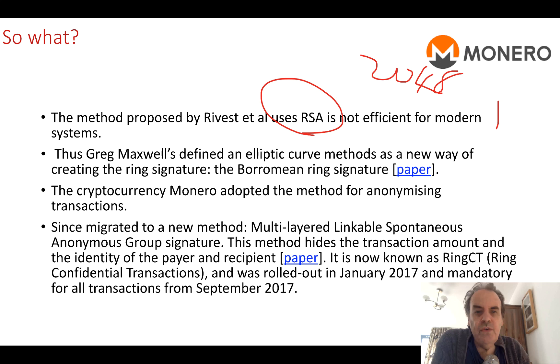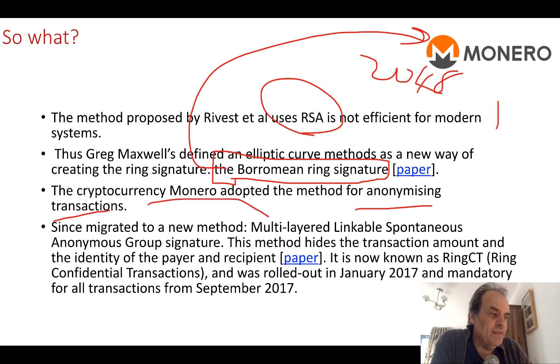So Greg Maxwell created a new type of signing using elliptic curves, and he used this method here. This was then used by the Monero cryptocurrency to implement anonymized transactions. But there were a few little weaknesses in it, and they've now moved towards the Multi-layered Linkable Spontaneous Anonymous Group Signature. And it's given this more simple name: Ring CT. Ring CT was rolled out in January 2017 and it was made mandatory for all transactions from September 2017.